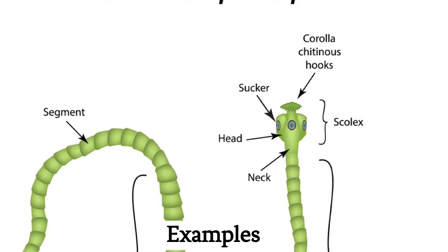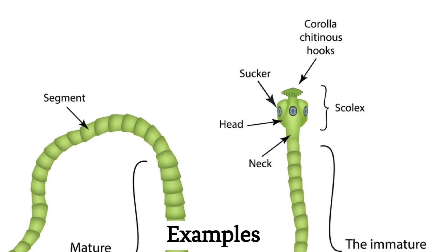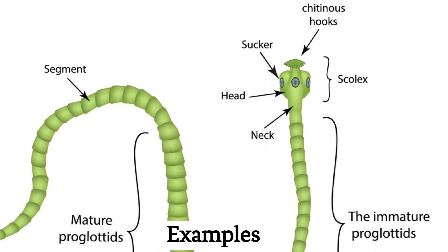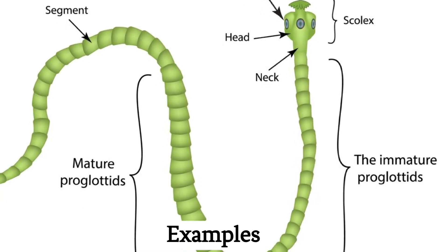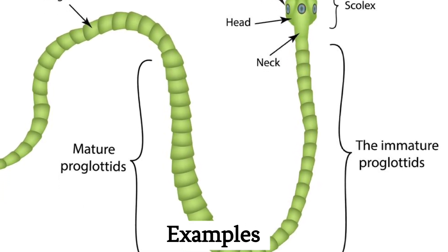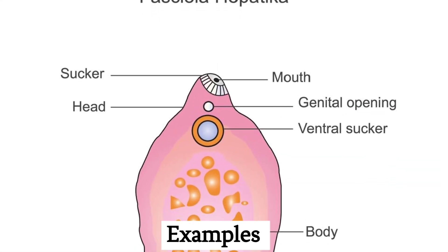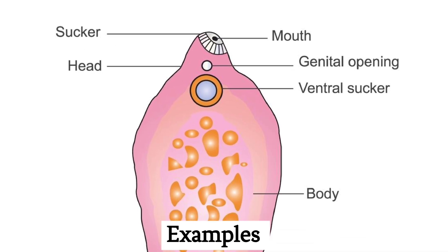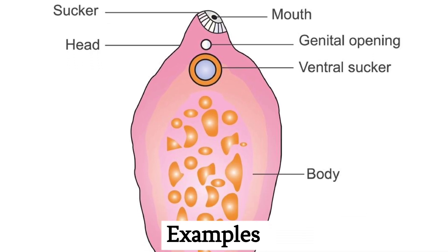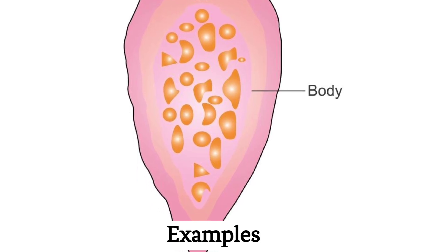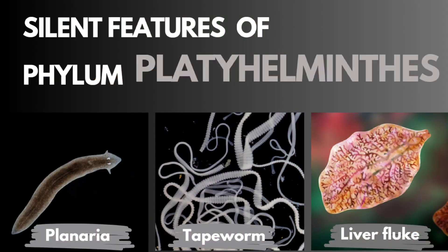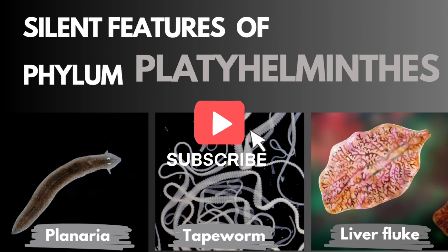Tapeworms: Cestoda tapeworms are parasitic flatworms that typically live in the intestines of vertebrates and can cause health issues when infesting humans. Flukes: Trematoda flukes are another group of parasitic flatworms that can infect various animals, including fish and mammals. These are some of the key characteristics and examples of organisms within the phylum Platyhelminthes.